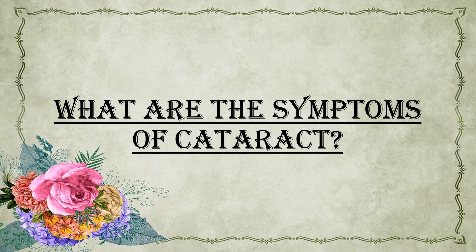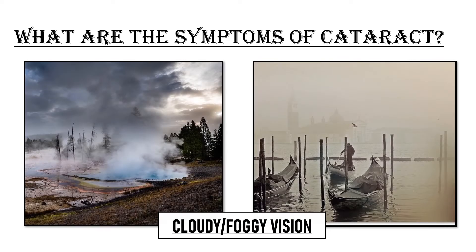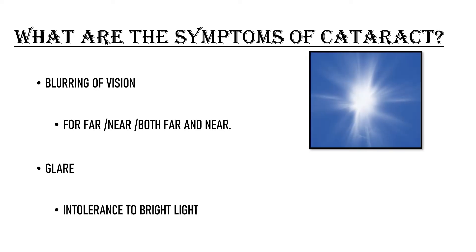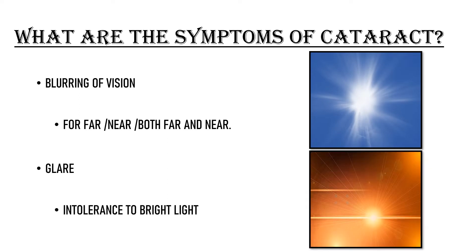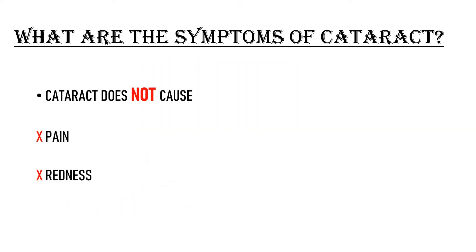What are the symptoms of cataract? The most common symptom is blurring of vision — for distance, for near, or for both. Patients typically complain of a cloudy or foggy vision. Another common symptom is glare, which is intolerance to bright light, such as difficulty looking at the sun or at oncoming vehicles, and difficulty driving at night. Some people also see rainbow-colored rings around lights, known as colored halos. Importantly, cataract does not cause any pain, redness, or watering from the eye.